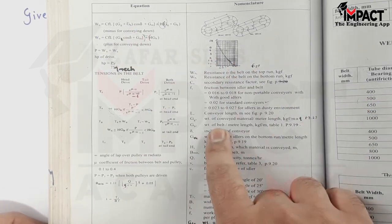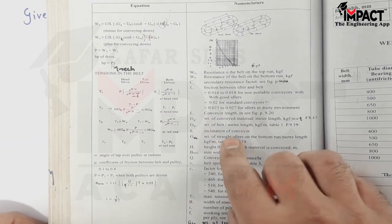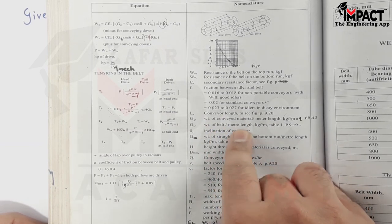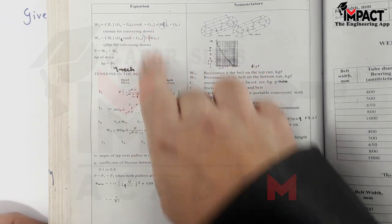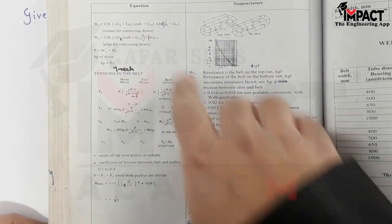G suffix B is the weight of the belt, self weight of the belt in terms of kgf per meter. Delta is the inclination angle of the conveyor system.